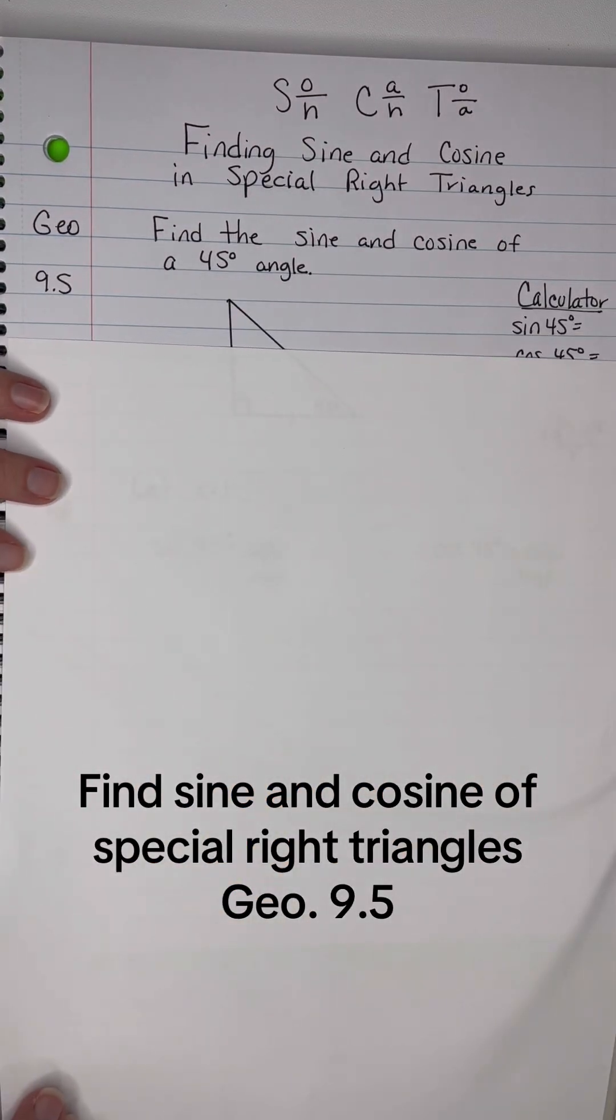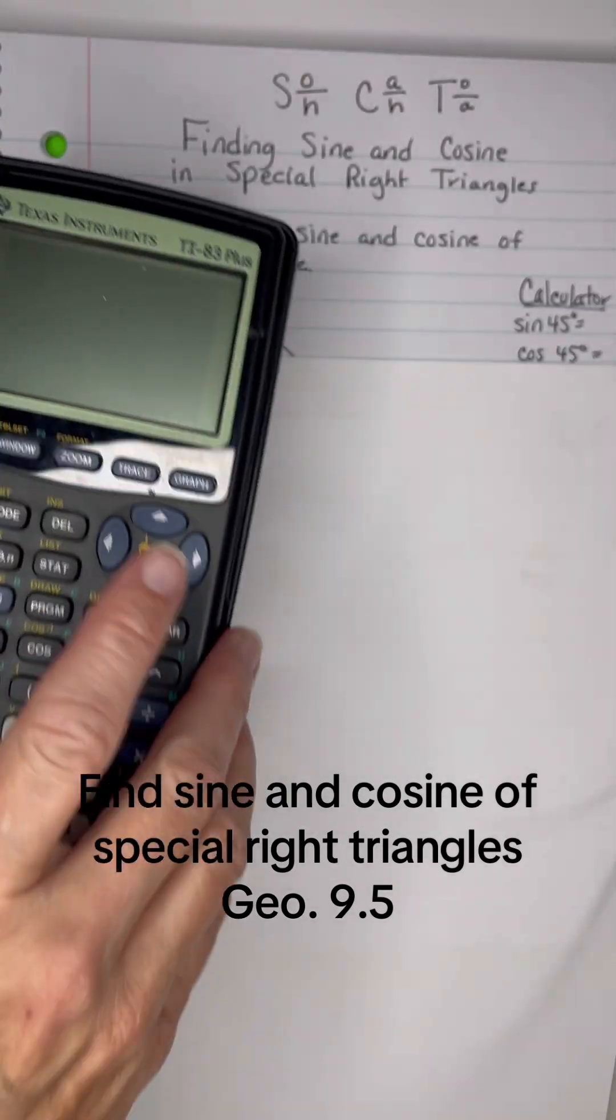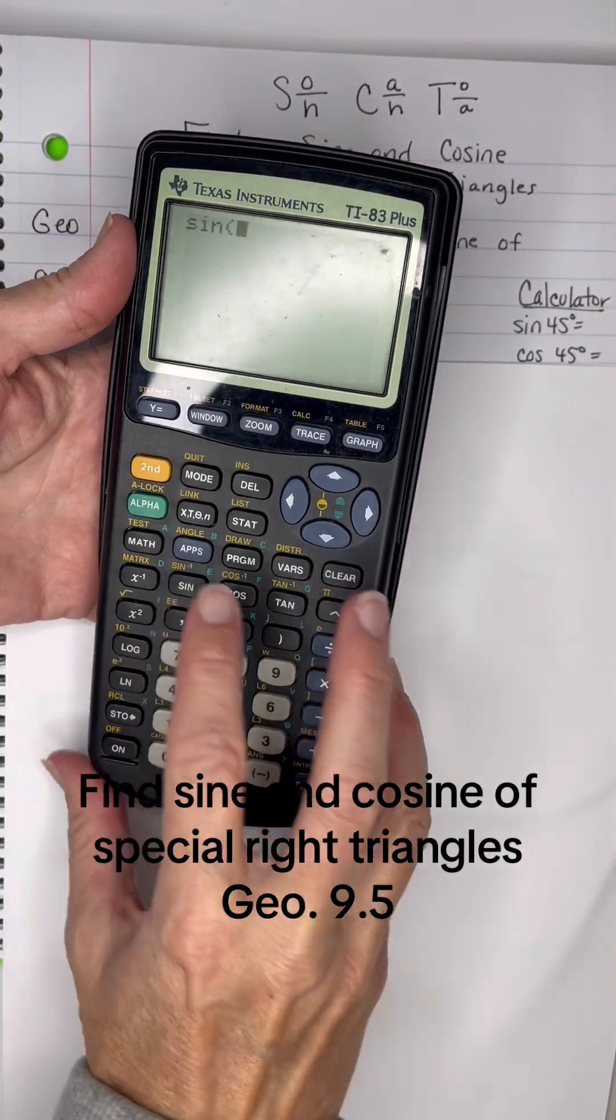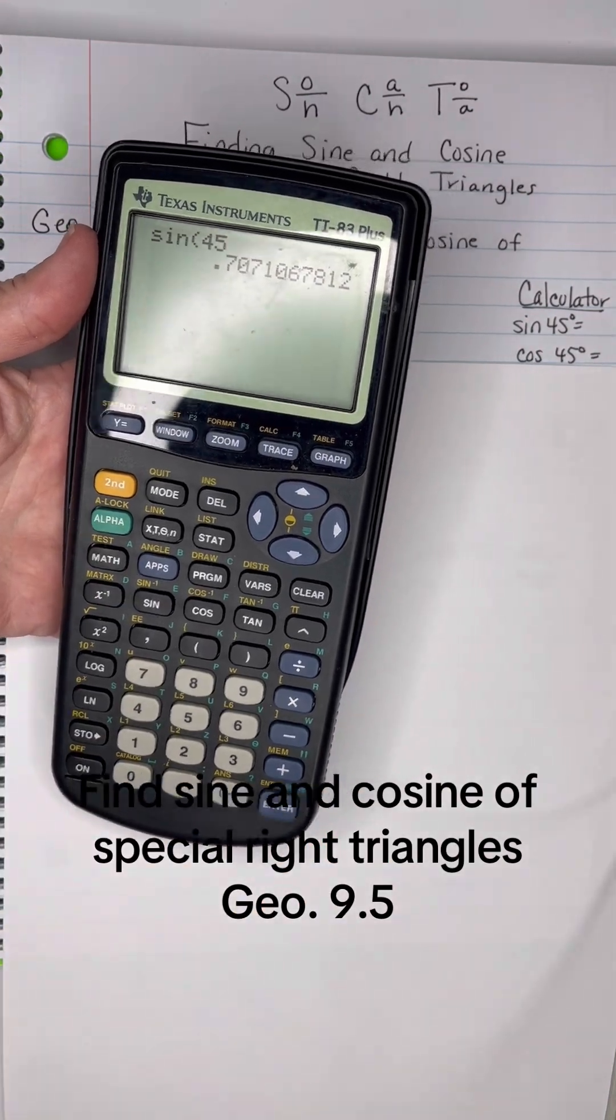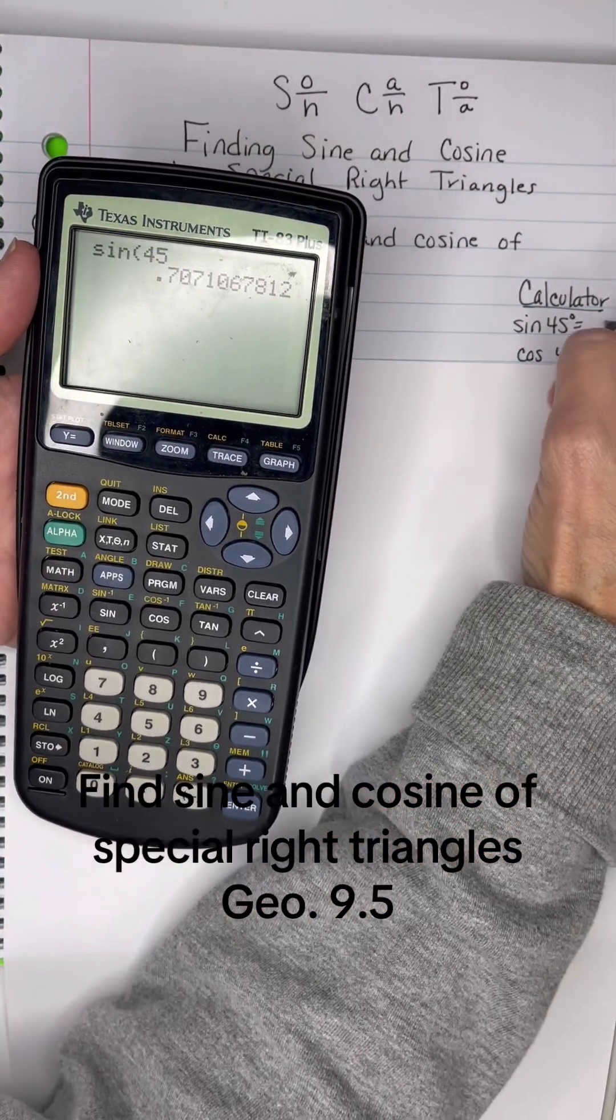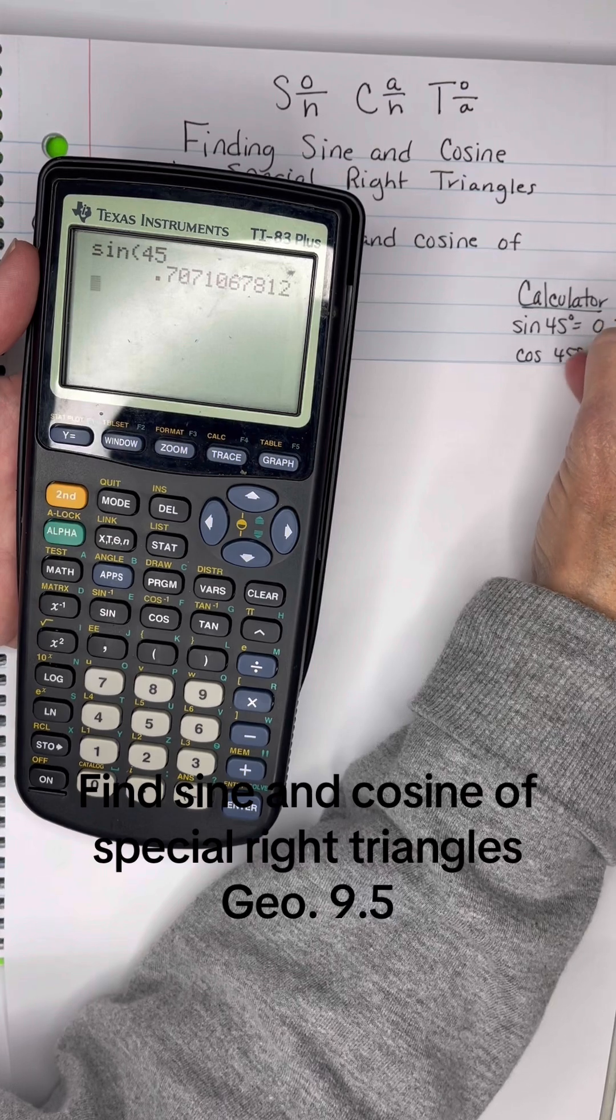First of all, let's do it with a calculator just to see what it's supposed to be. So type in sine, if you're in degree mode, 45, you get 0.7071.